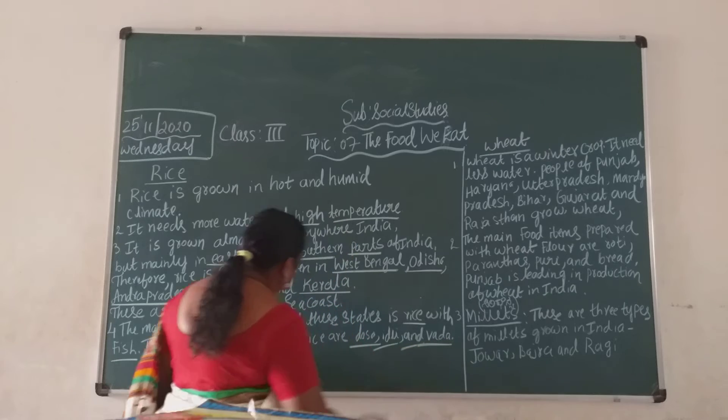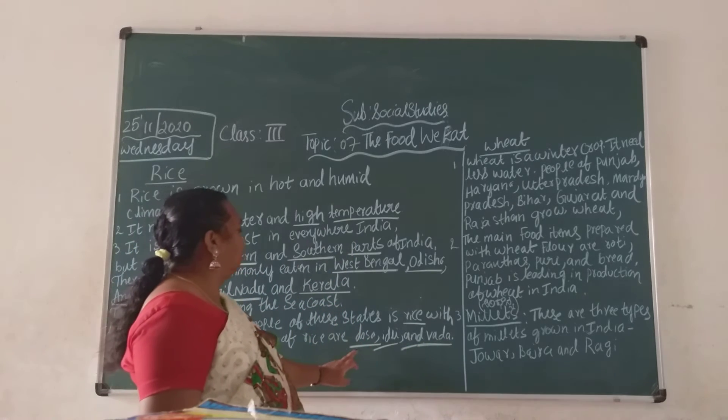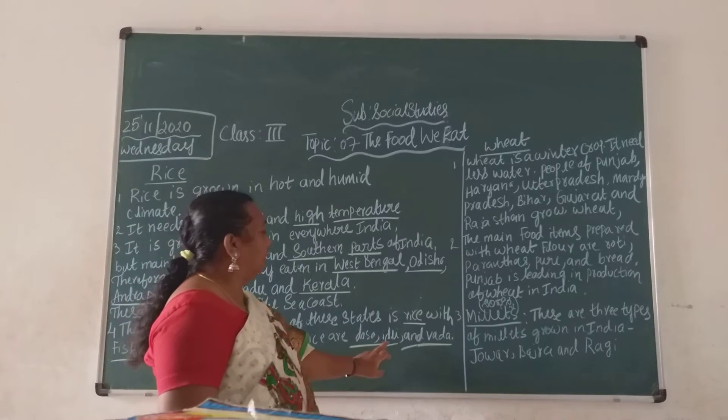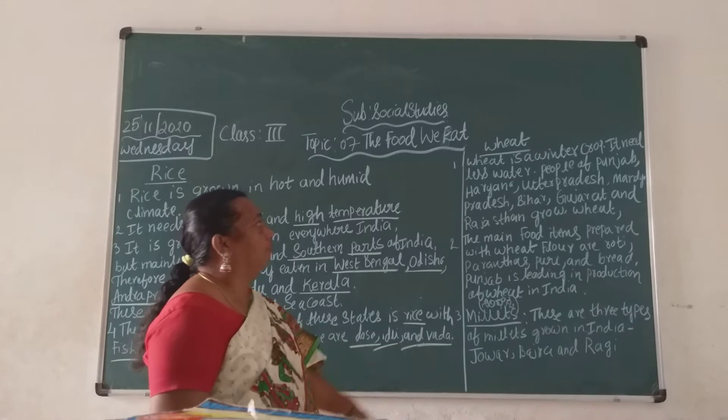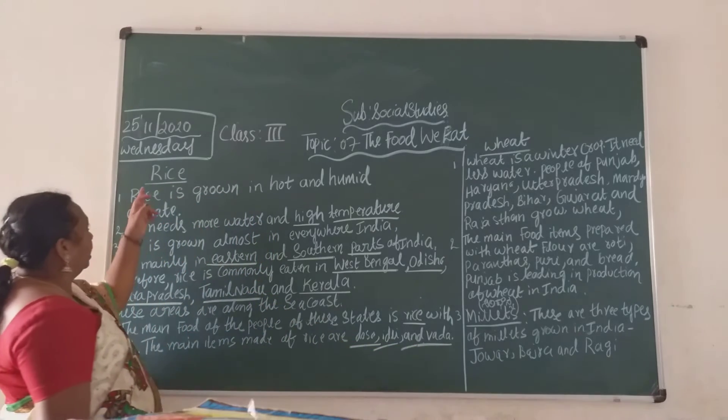What are the things made of rice, children? The main items made of rice are dosa, idli and vada.